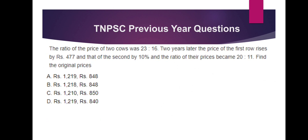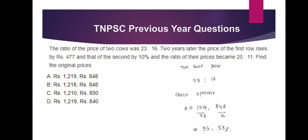The ratio of price in 2000 is 23 to 16. Two years later, the price of the first item rises. The first item is 477 rupees and the second is 10 percent. The new ratio of prices is 20 to 11. What was the original price? Select the option: original ratio is 23 to 16. The price for the second gives 8.48. That is the answer. If we get the option for 2 years later, we check the ratio.